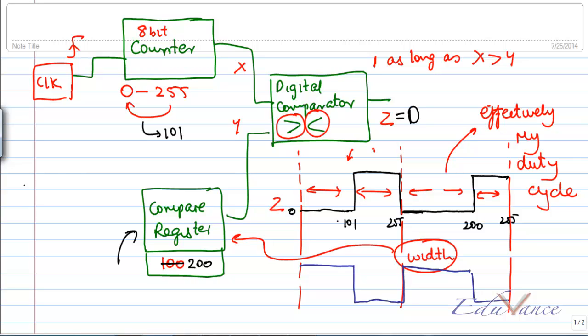So using a combination of the compare value and the type of comparator or comparison, we can vary the pulse width.